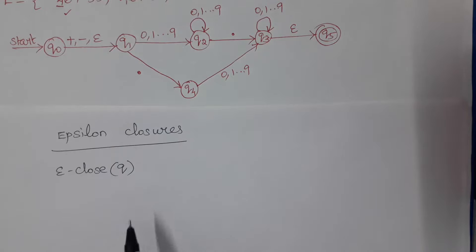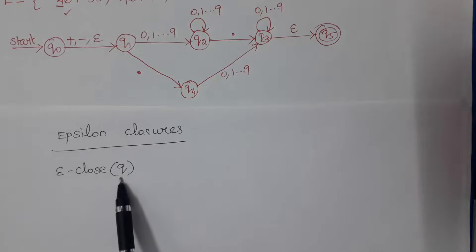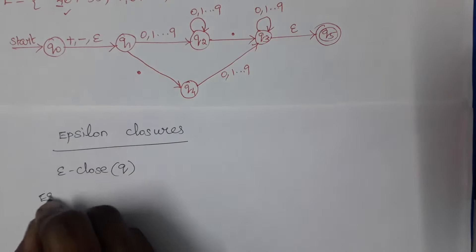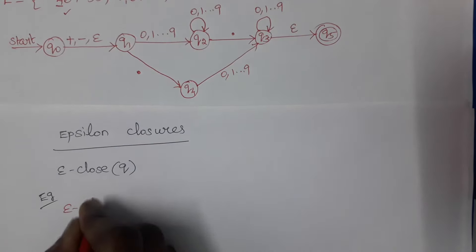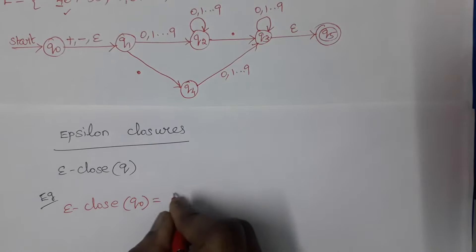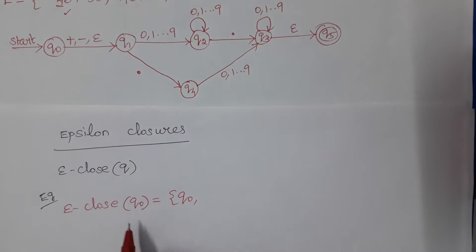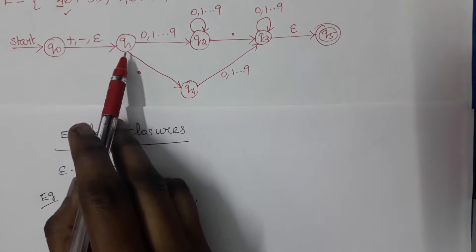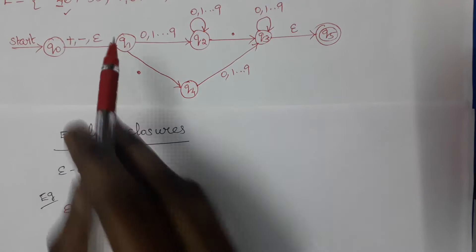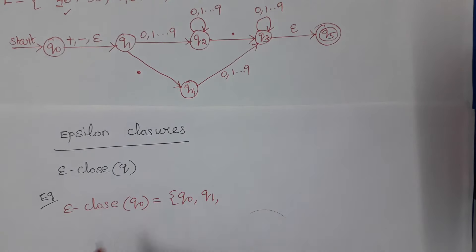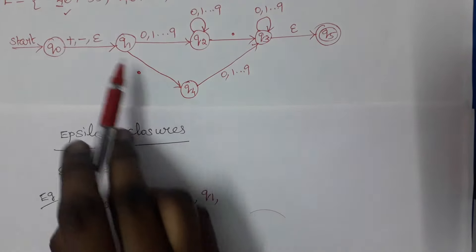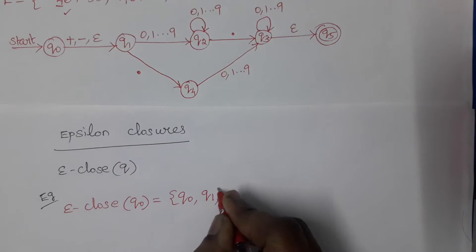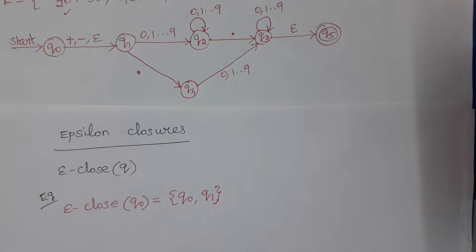Next we will find epsilon closures for particular states. It is represented as E-close of q. E-close of q means following all epsilon transitions out of q. For E-close of q-naught: first write q-naught, then check whether any epsilon transitions go out of q-naught. From q-naught there is an epsilon transition going to q1, so include q1. Then check from q1 — there are no outgoing epsilon transitions. So E-close of q-naught is {q-naught, q1}.